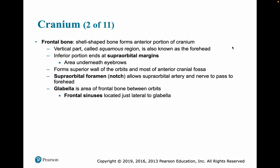The frontal bone is a shell-shaped bone forming the anterior portion of the cranium. It has a vertical part called the squamous region, more commonly referred to as the forehead. Its inferior portions end at the supraorbital margins, just below the eyebrows. It forms the superior wall of the orbits and most of the anterior cranial fossa. The supraorbital foramen, or notch, allows the supraorbital artery and nerve to pass to the forehead. The glabella is the area at the front of the bone between the orbits, and the frontal sinuses are located just lateral to the glabella.